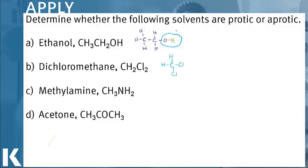Our second one, dichloromethane, has hydrogens that are attached to a carbon. Because these hydrogens are not attached to an oxygen or a nitrogen, this is an aprotic solvent.